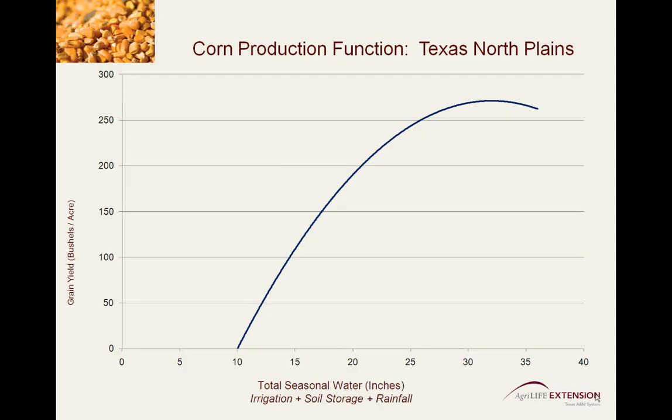The backbone of our analysis is this graph, which is commonly referred to as a production function. This production function demonstrates the expected grain yield as a function of total seasonal water applied. The numbers on the x-axis represent a combination of irrigation, soil storage of off-season precipitation, and in-season rainfall. For grain corn in the Texas North Plains, it is very evident that additional water added provides an increase in yield almost linearly until the genetic yield potential of the crop is reached.